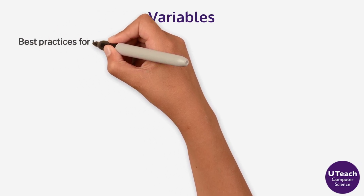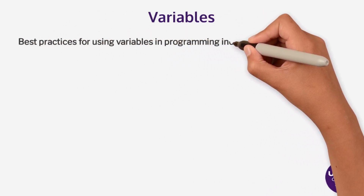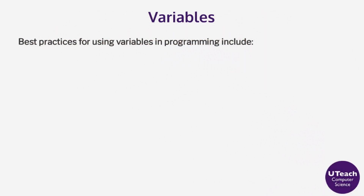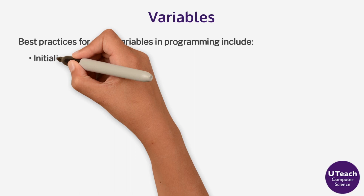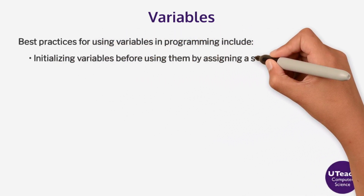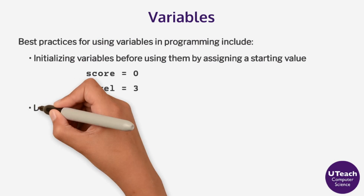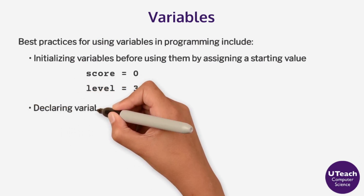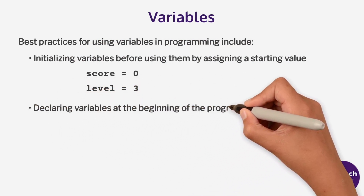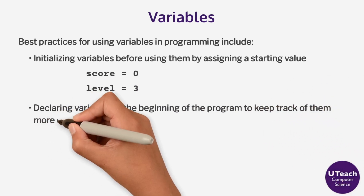Best practices for using variables in programming include initializing variables before using them by assigning a starting value, and declaring variables at the beginning of the program to keep track of them more easily.